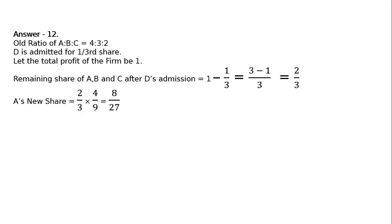Then A's new share. This 2 upon 3 will be shared among A, B, C in the ratio of 4 by 9, 3 by 9, 2 by 9. Say 4:3:2.